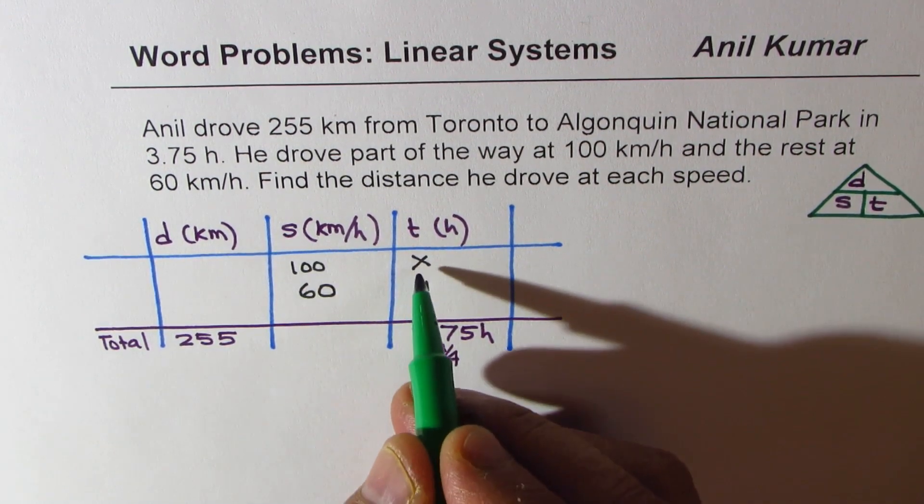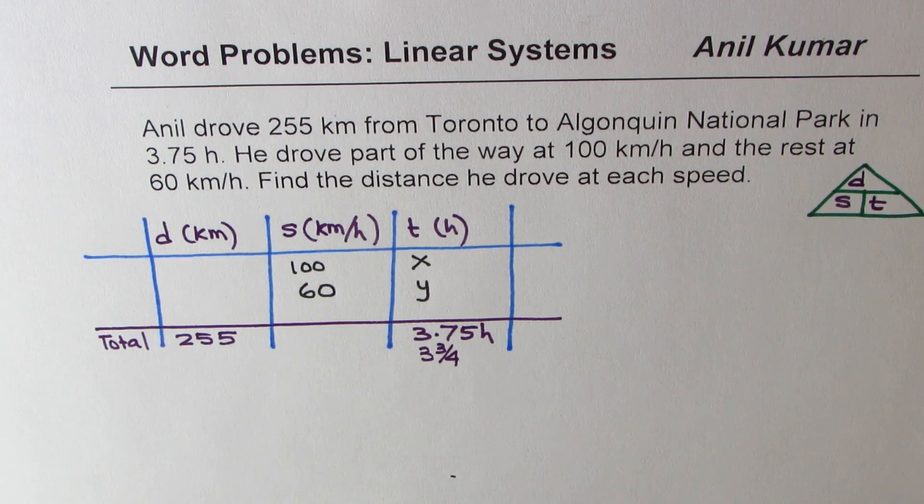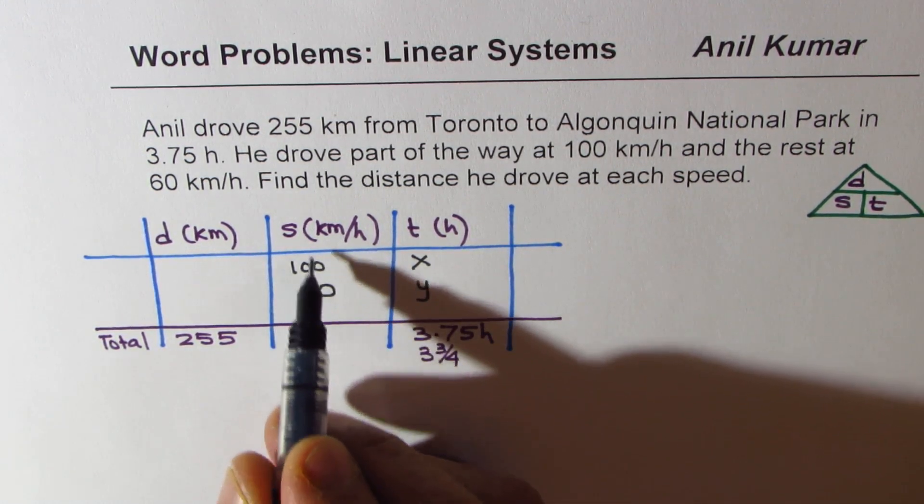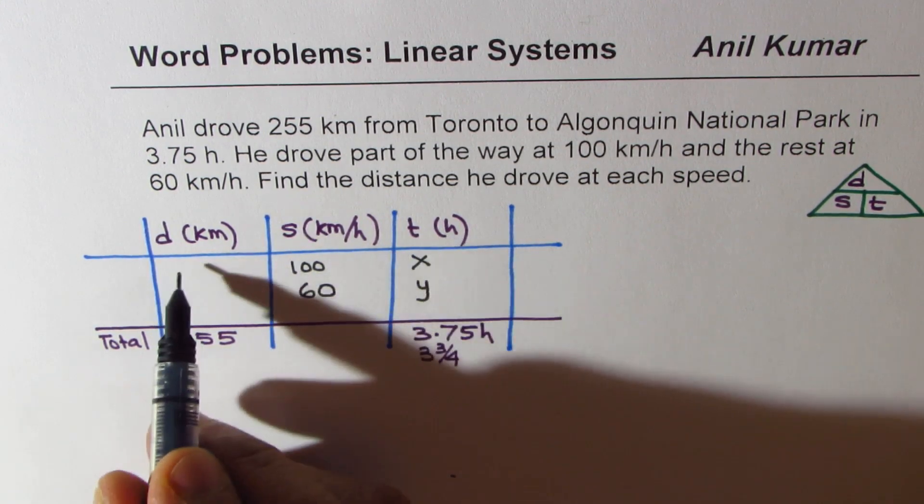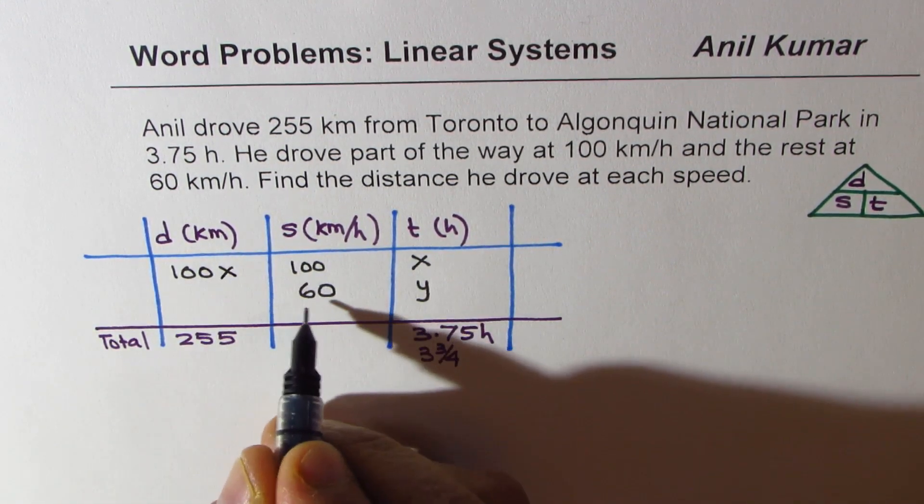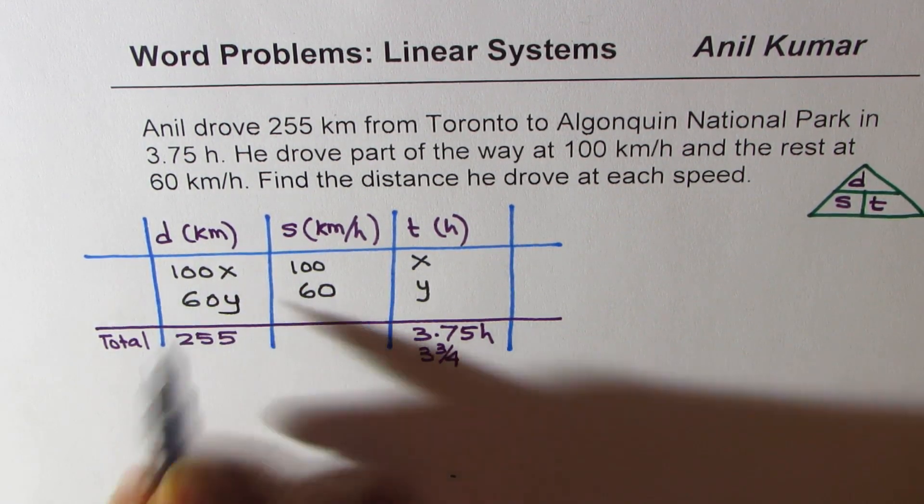So the key here is to use the variable for time. In that case, I know that the distance will be product of speed and time. So we get this distance as 100x and the other distance is 60 times y. Do you see that?